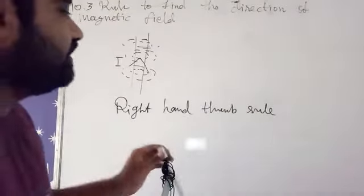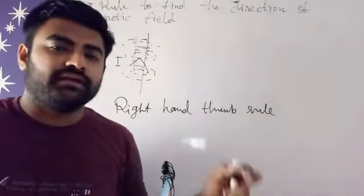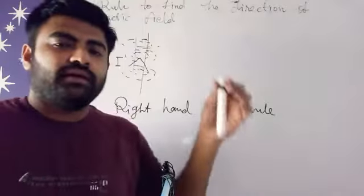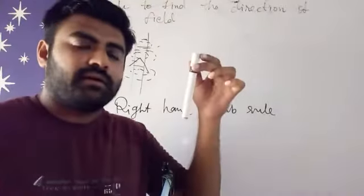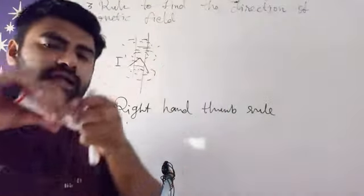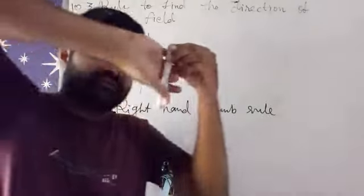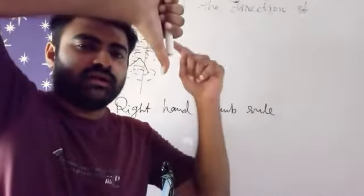This is how we can find the direction of magnetic field. Suppose in this conductor our current direction is in downward direction. In downward direction, our thumb is in downward direction.